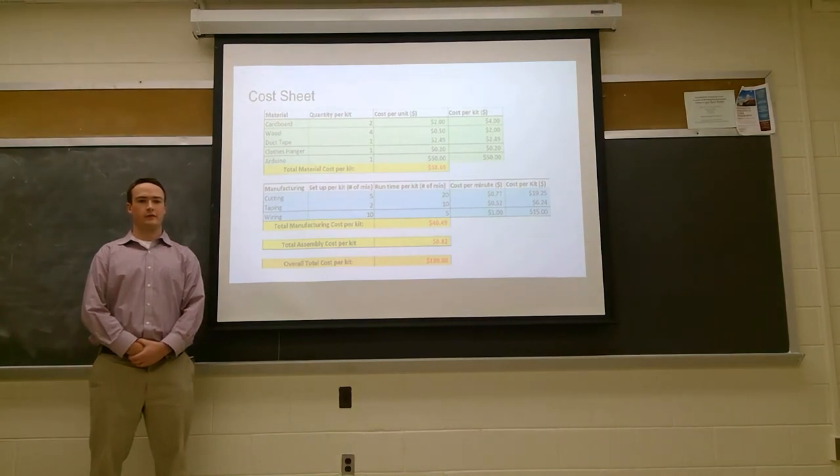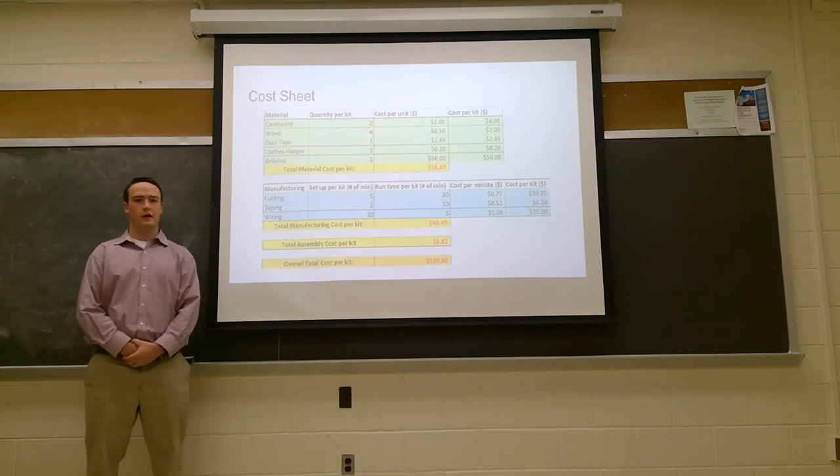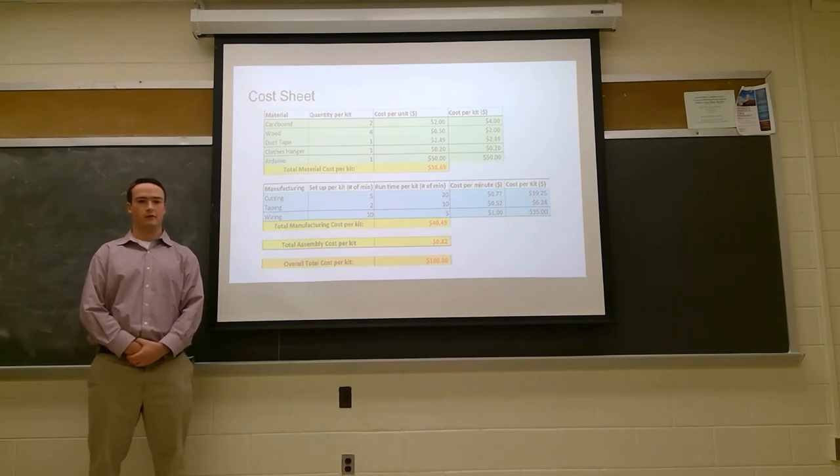Our cost sheet depicts price estimates with materials and manufacturing in mind. After purchasing the material from hardware distributors, the team found the necessary quantities of material along with the respective costs for the BRG kit. A total manufacturing cost per kit of $58.69 met the team's expectations as the price for the Arduino for each kit was known to be significantly more expensive than other materials. The team then analyzed the manufacturing methods used during physical creation of the BRG and estimated the respective labor costs per minute depending on the skill level required. Taking into account total material cost per kit, total manufacturing cost per kit, and total assembly cost per kit, the overall cost per kit was then estimated at $100, which was expected as it was used in calculating projections and investment proposals.